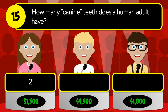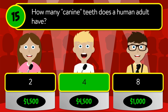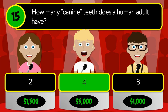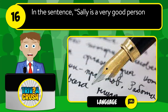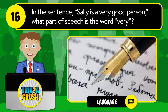Question number fifteen: how many canine teeth does an adult human have? Is it two, four, or eight? The correct answer is four.